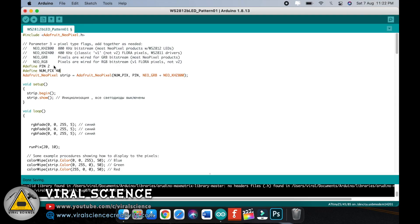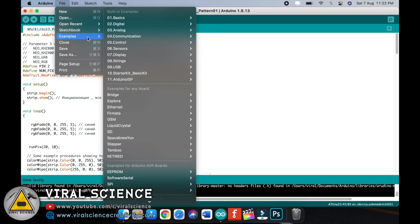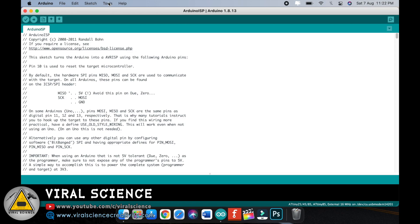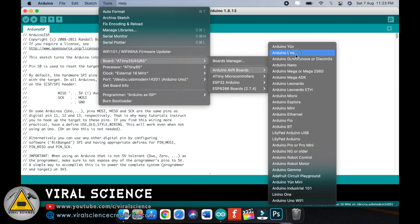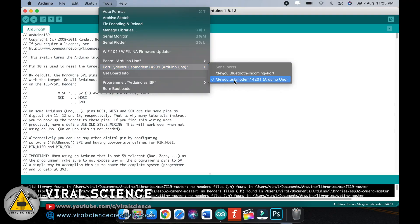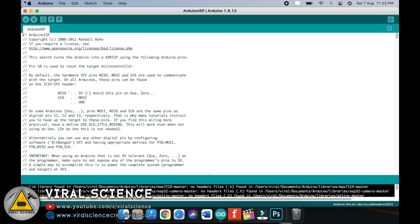First, go to examples and select Arduino ISP. We'll upload this code to the Arduino Uno board. Select the board, select the port as Arduino ISP, and upload the code.